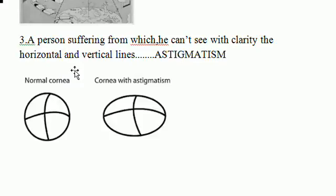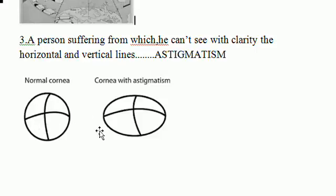The third question: a person suffering from a condition where they cannot see horizontal and vertical lines with clarity — this is astigmatism. If a person is suffering from astigmatism and we show a picture, it will appear distorted to them, as shown here.